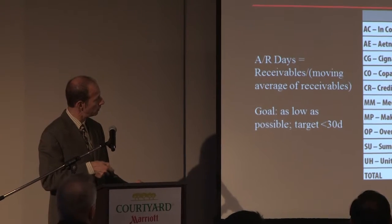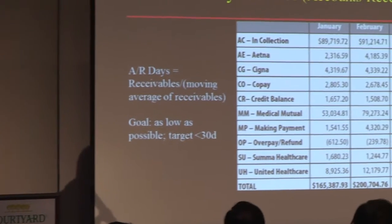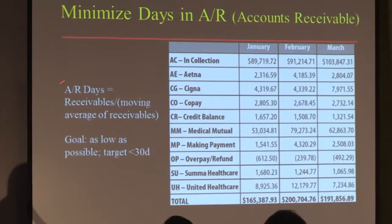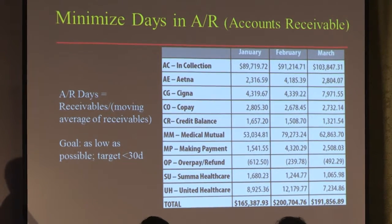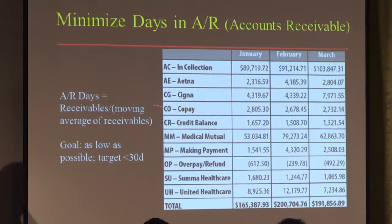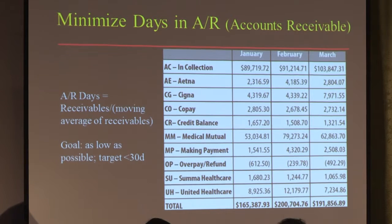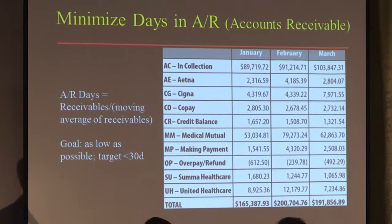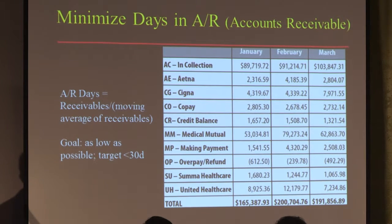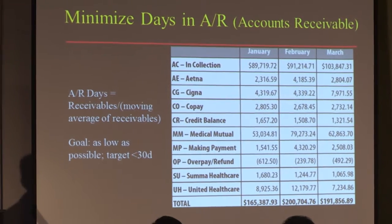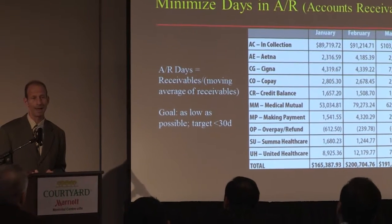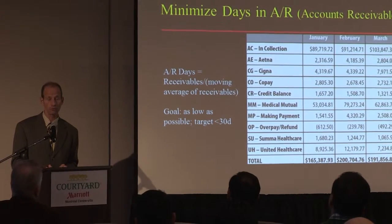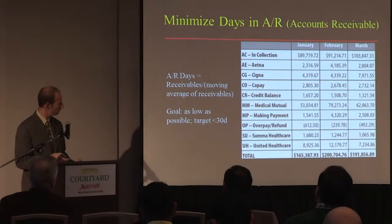When analyzing large groupings of data, an important measure becomes the accounts receivable days — the days in AR. It's the receivables — the dollars you're expecting to bring in — divided by a moving average of the receivables. The goal is to have that number be less than 30 days; you don't want more than one month's worth of charges out there waiting for dollars to come in. Small practices commonly get down into the 30s. Large academic practices with billing offices sending out more than a million claims a month strive to get down into the 30s — ours has been in the 30s traditionally for the past couple of years.